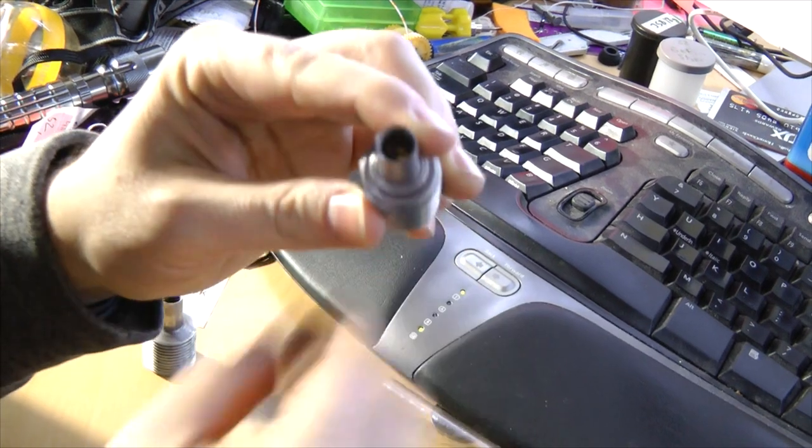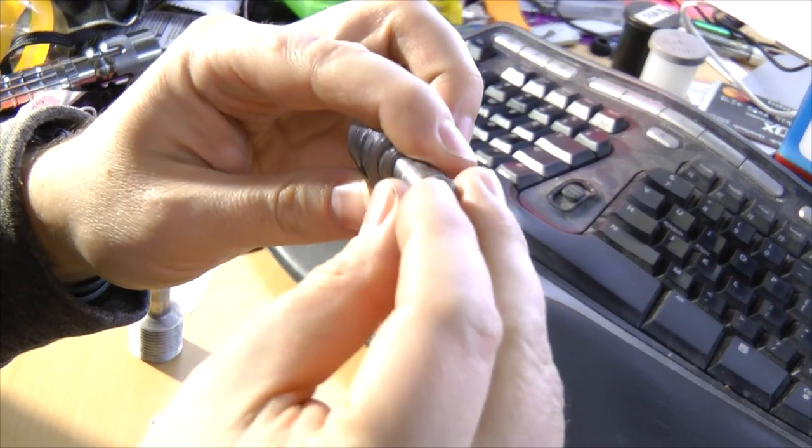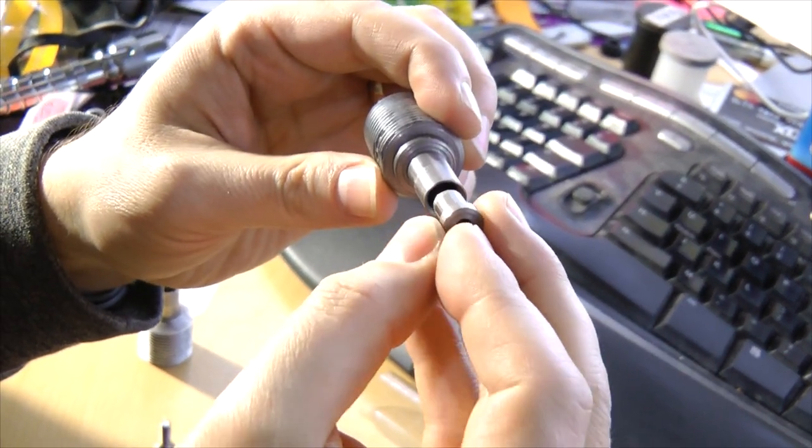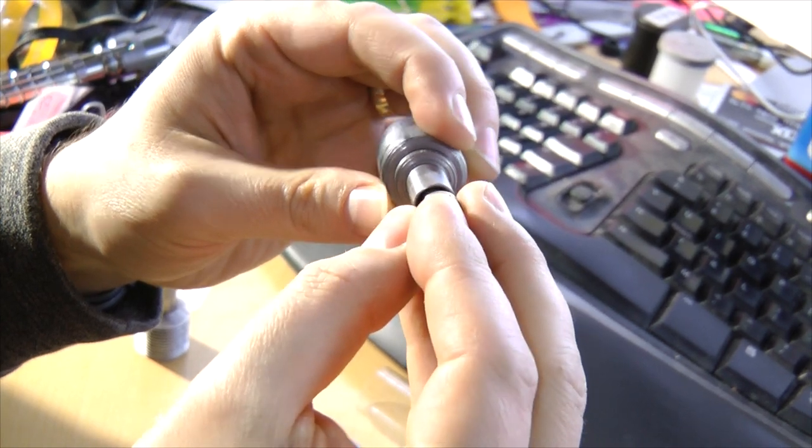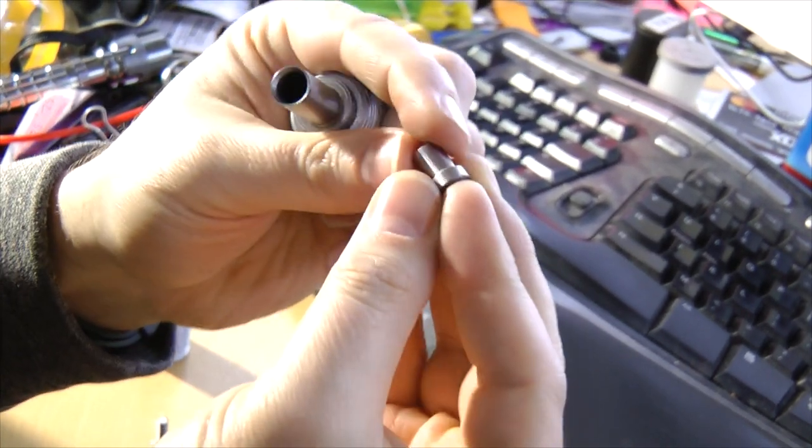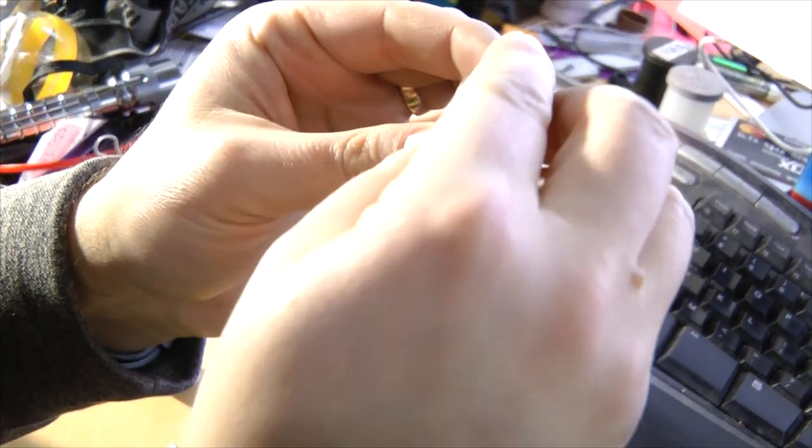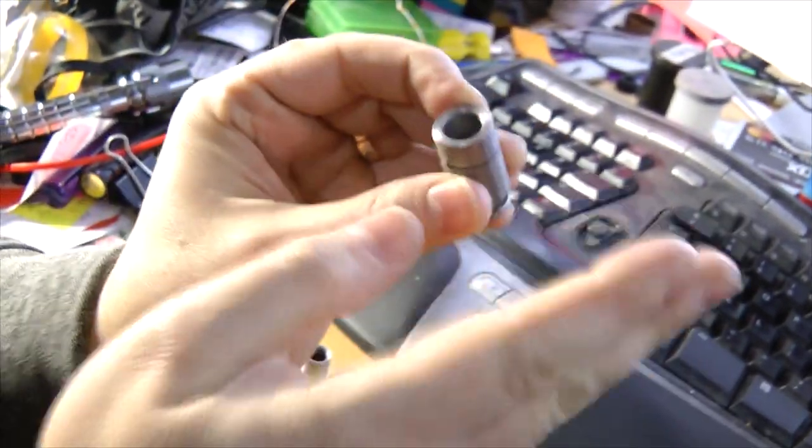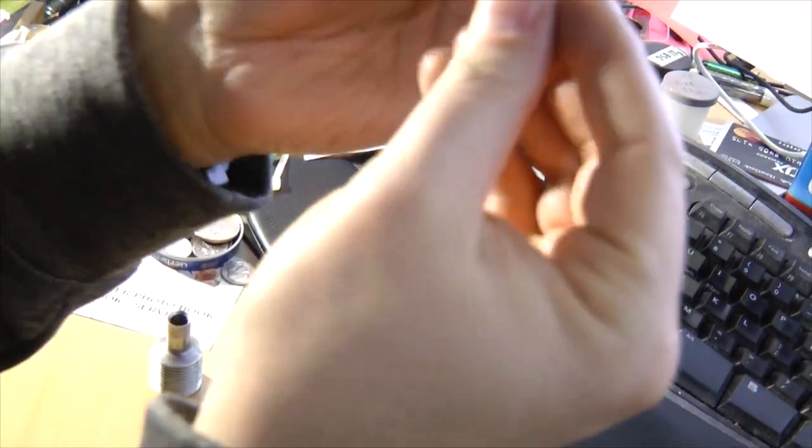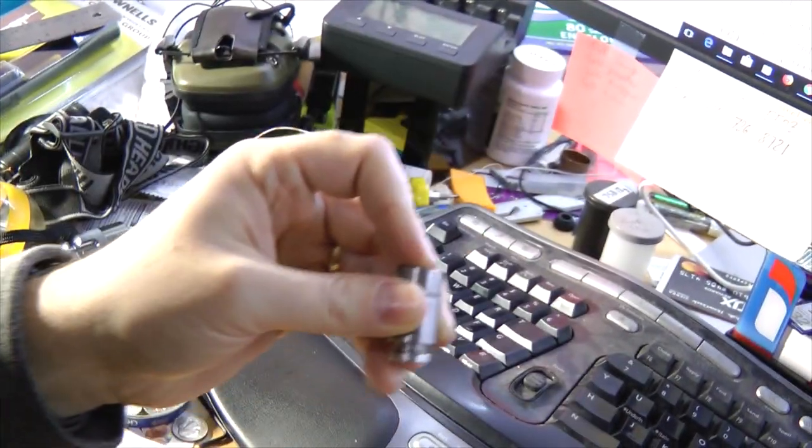When you're punching the cup, it's being even and being formed around this. This goes here like this, and the screw holds it together.